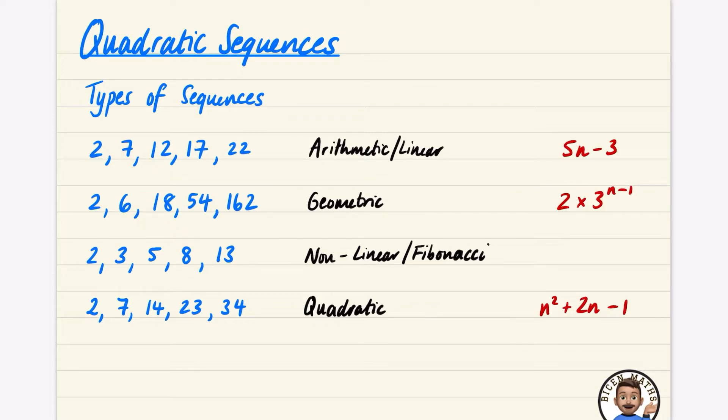You're probably already familiar with this arithmetic or linear sequence because you can clearly see what's happening here. Each time we're moving along one space, adding on five each time. Hopefully you remember the nth term of this is 5n minus 3.